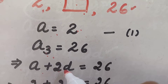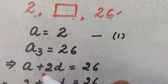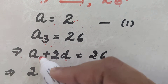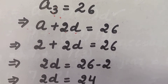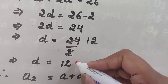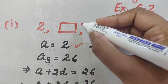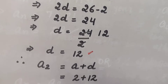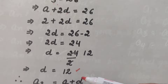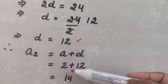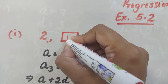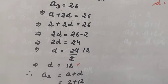a₃ means a + 2d. Since a₃ is 26, we have a + 2d = 26. We know a = 2, so putting that in we can find 'd'. Now we have both 'a' and 'd'. To find the second term: a₂ = a + d = 2 + 12 = 14. So the missing term is 14.